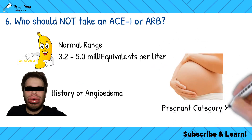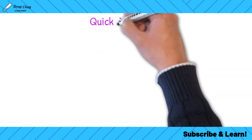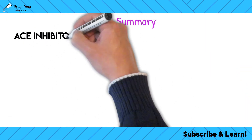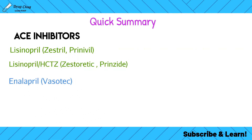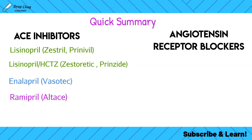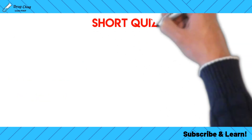Third, ACEs and ARBs are category X for pregnancy, so pregnant patients should not take them. A quick drug summary: ACE inhibitors end in '-pril' — lisinopril (Zestril/Prinivil), with a combination product with HCTZ (Zestoretic/Prinzide); enalapril (Vasotec); and ramipril (Altace). ARBs end in '-sartan' — losartan (Cozaar), olmesartan (Benicar), and valsartan (Diovan), where both the generic and brand name contain a V.